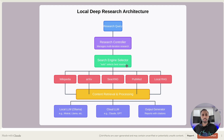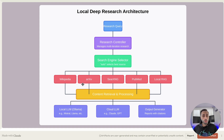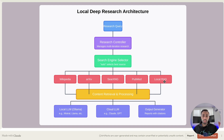For the source of data, there is a search engine selector. You can have these choices specified for you — say, you want your research just based on Wikipedia, ArXiv, or PubMed, or you can even have it based on local RAG. That means you can have this researcher running on just your own local documents without necessarily going to the web.